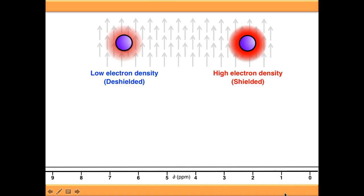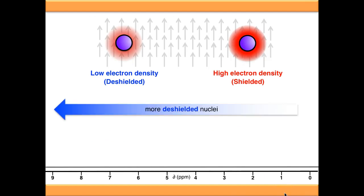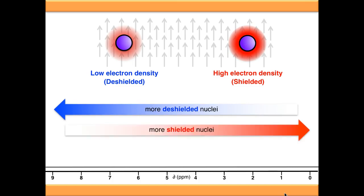What impact does this have on our actual NMR spectrum? A deshielded nucleus will generally appear at higher frequency, or higher PPM, so further to the left of our NMR spectrum. Whereas a more shielded nucleus will appear further to the right, or at lower PPM. So a signal from the deshielded nucleus might be up here, whereas the shielded nucleus might be down here.